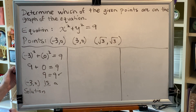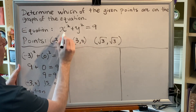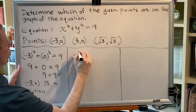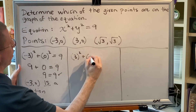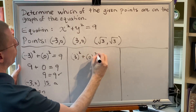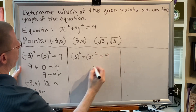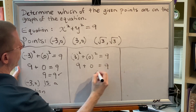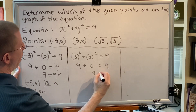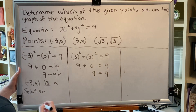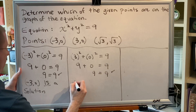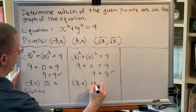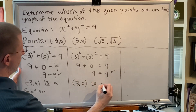Let's try our next point (3, 0). Replacing all x's with 3 and all y's with 0, we get 3 squared plus 0 squared equals 9. 9 plus 0 equals 9, so 9 equals 9. We get a true statement, so (3, 0) is a solution.